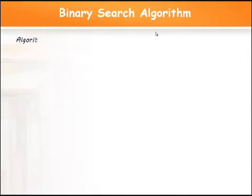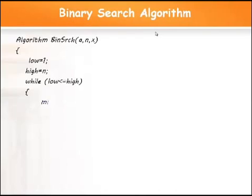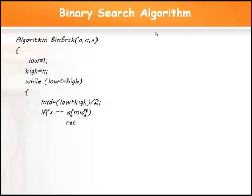The algorithm is named Binary Search. It takes inputs A (array), N (size of array), and X (element to be searched). Initially, set low = 1 and high = N. We check while low ≤ high (to ensure there are elements remaining). First, calculate mid = (low + high) / 2. Then compare X with A[mid]. If X equals A[mid], the element is found — return mid.